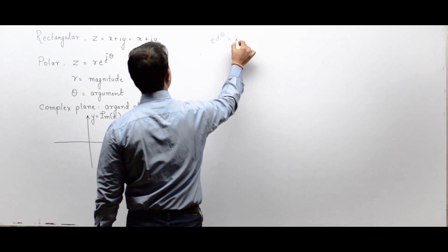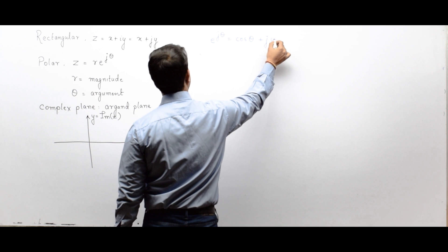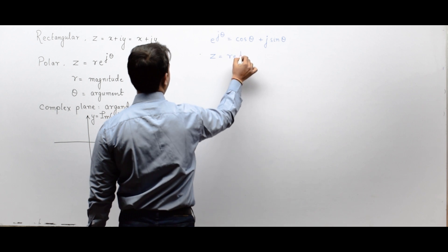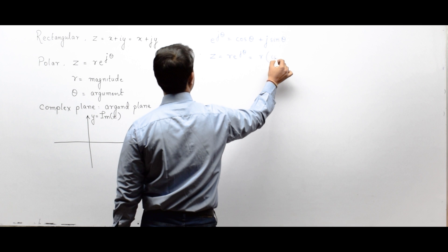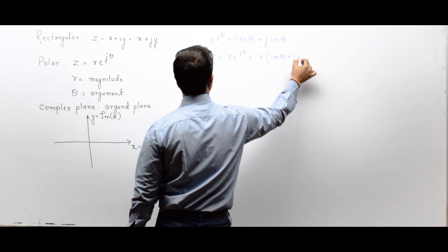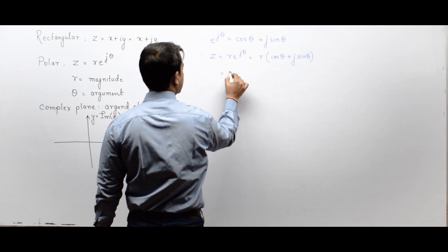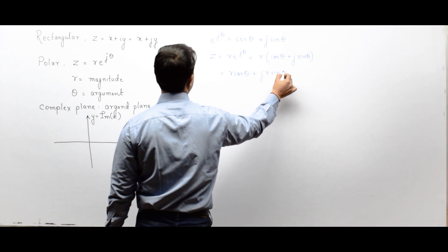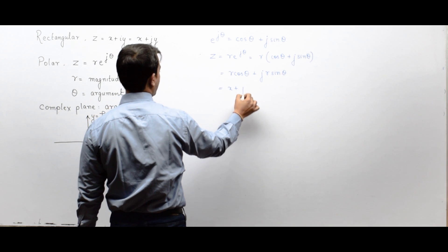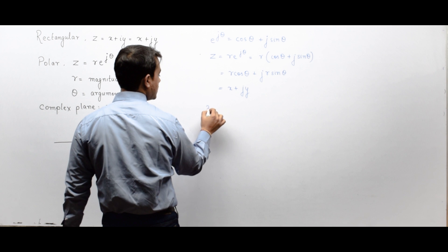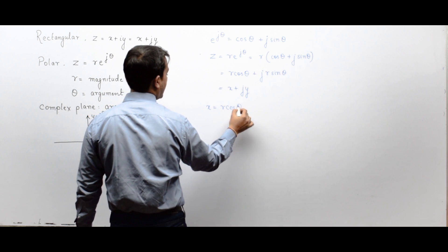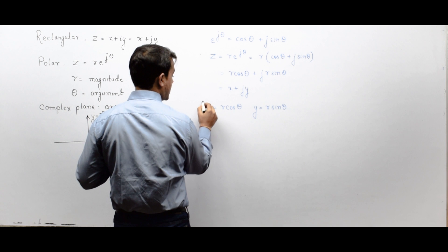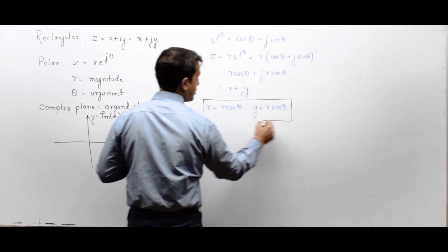e^(jθ) is always expressed as cos θ + j·sin θ. So z = r·e^(jθ) becomes r·(cos θ + j·sin θ), which equals r·cos θ + j·r·sin θ. Comparing with the rectangular form x + jy, we get x = r·cos θ and y = r·sin θ — that is how we convert from polar to rectangular.